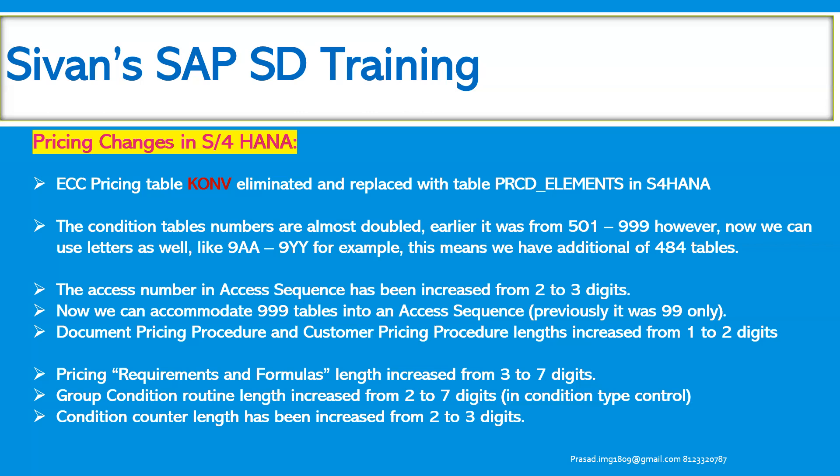Access sequence is a search strategy by which the system finds the valid condition record for the valid condition type. If it finds the valid condition record in the first instance, it will not go further to find another condition record, because it is already found — which increases the system's performance. This same access sequence functionality is also available in S4 HANA.